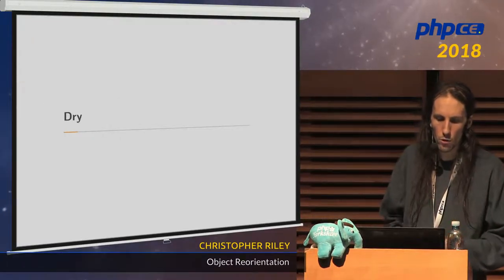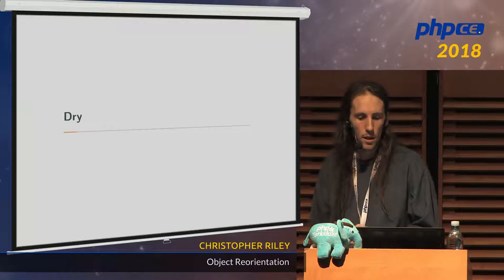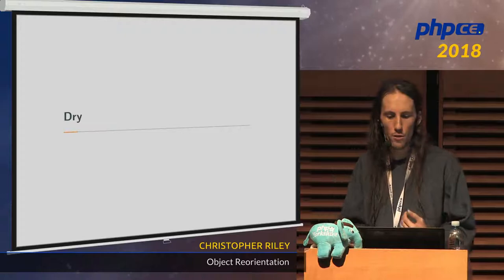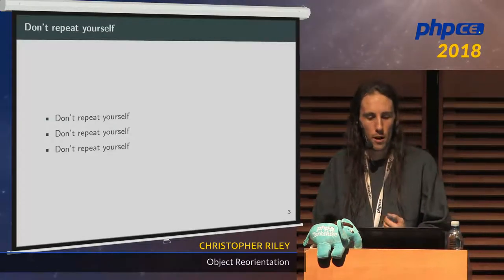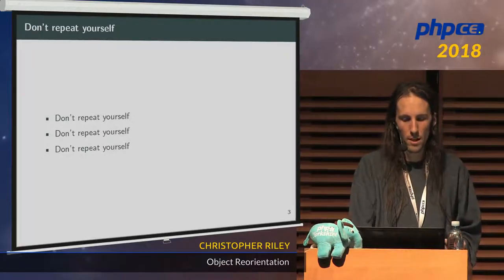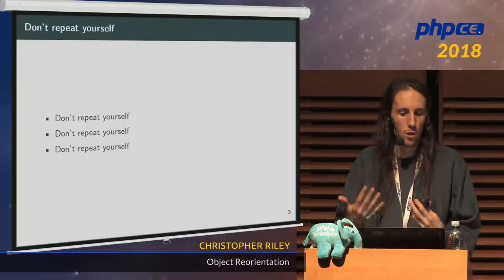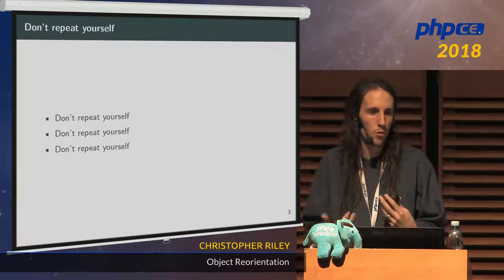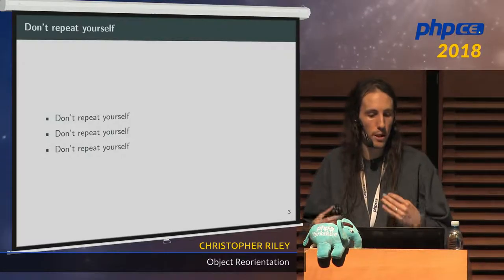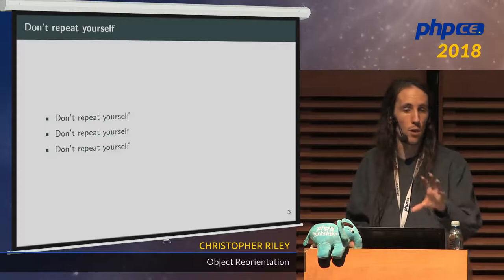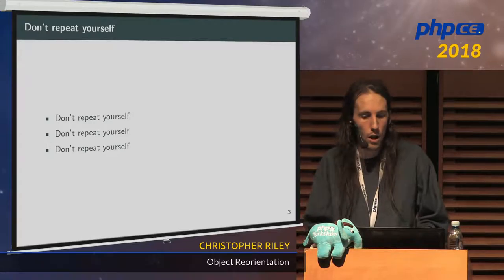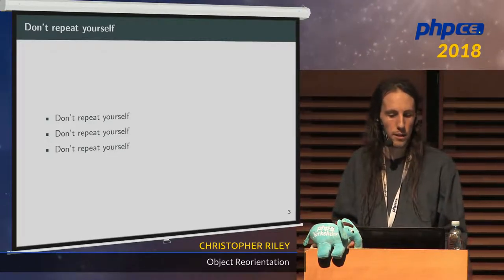Another oft-quoted rule with a nice acronym is DRY — Don't Repeat Yourself. The idea is to remove duplicated logic from your code. This has many advantages, such as reducing the effort to write and test the code in the first place. If you've only got one instance of a piece of business logic, you only have to write it once and only have to write one test. It also means you don't introduce inconsistent behavior.